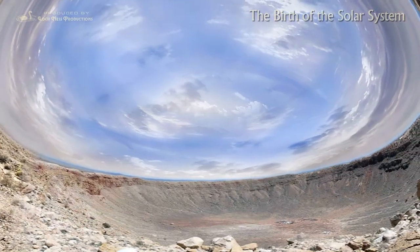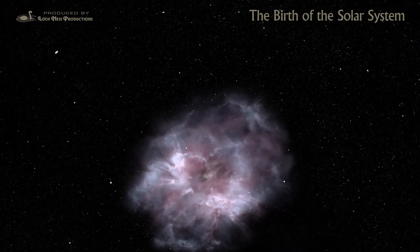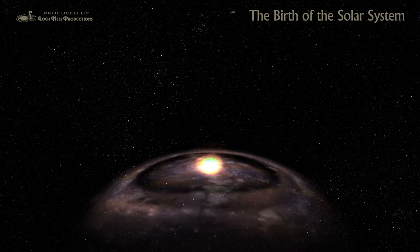Even today, we see evidence of collisions that shaped our planet. Planetary science is revealing the secrets of our solar system's chaotic and violent formation.